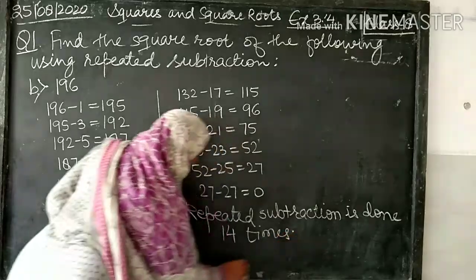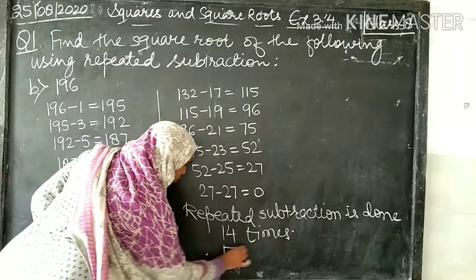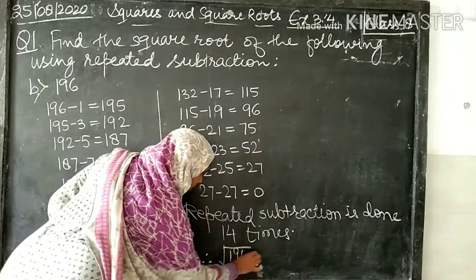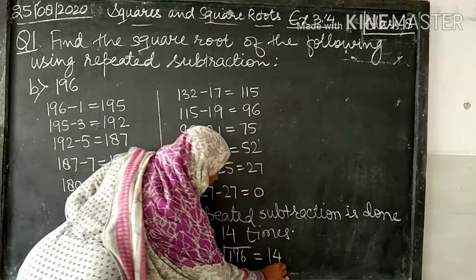14 times. Therefore, square root of 196 is 14.